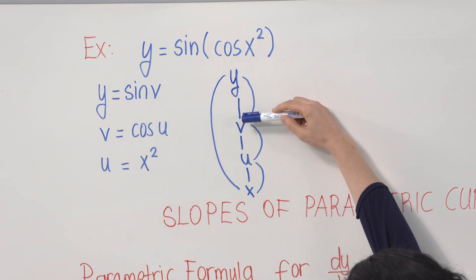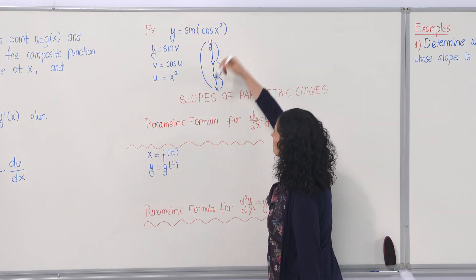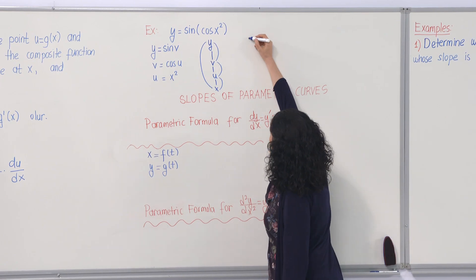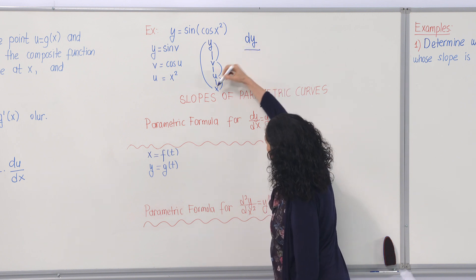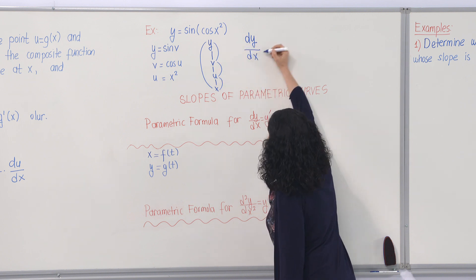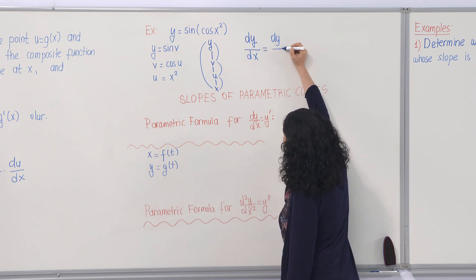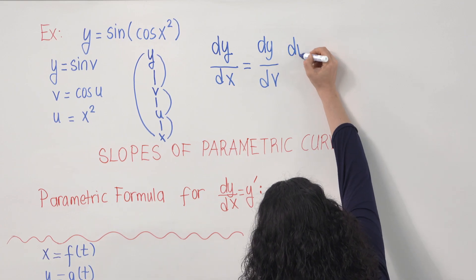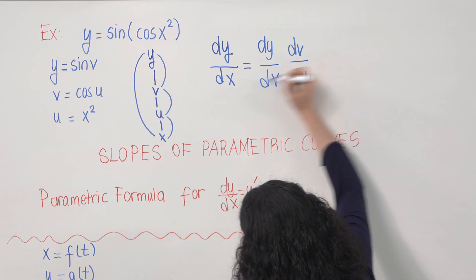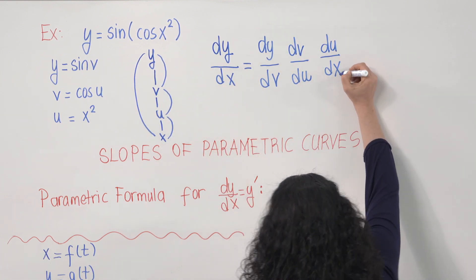So y depends on v, v depends on u, u depends on x. Applying the chain rule using the diagram: dy over dx equals dy over dv, times dv over du, times du over dx.